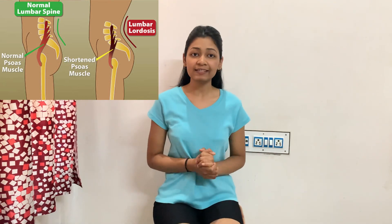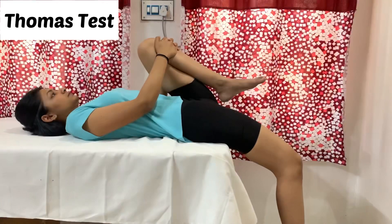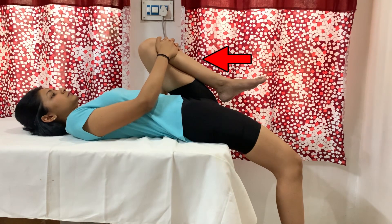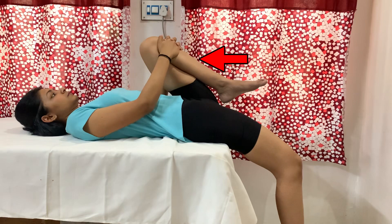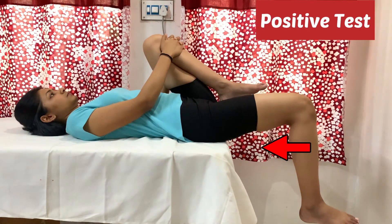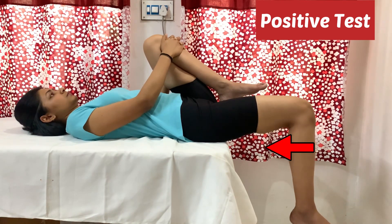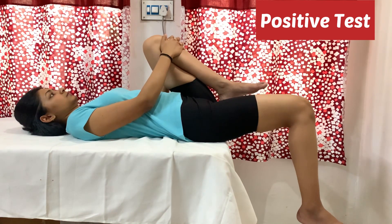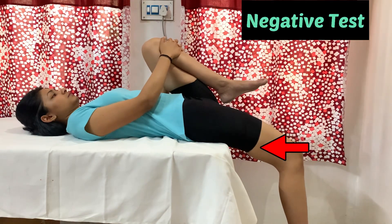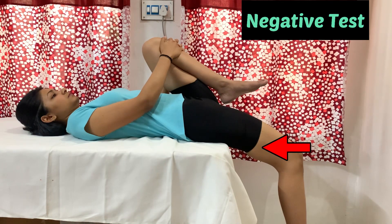For the Thomas test, one lower limb of the patient will be flexed to flatten out the lumbar spine and to stabilize the pelvis. If there is tightness or contracture in the iliopsoas, the other leg will rise off the table, and this is considered a positive Thomas test. But if there is no contracture in the hip flexors, the hip will remain flat on the examining table, which is considered a negative Thomas test.